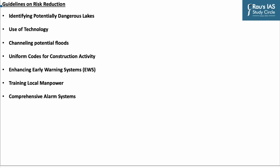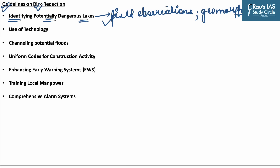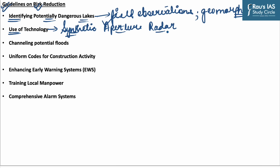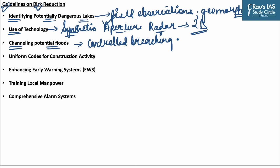Let us see guidelines on risk reduction due to glacial lake outbursts. First, identify potentially dangerous lakes based on field observation, records of past events, geomorphologic and geotechnical characteristics of the lake and surroundings, and other physical conditions. Second, promote use of technology such as synthetic aperture radar imagery — a form of radar used to create two-dimensional images — to automatically detect changes in water bodies including new lake formations during monsoon months. Third, channeling of potential floods: the National Disaster Management Authority has recommended reducing water volume through controlled breaching, pumping or siphoning of water, and making a tunnel through the moraine barrier or under an ice dam.